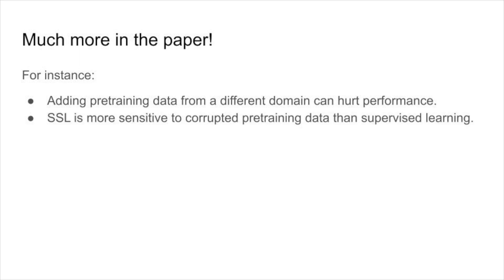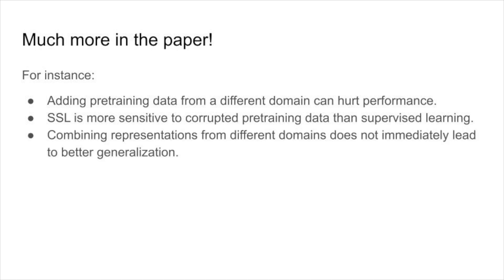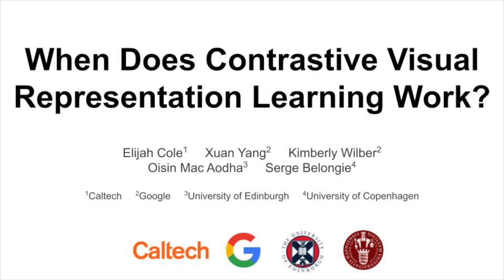There's much more in the paper. For instance, adding pre-training data from a different domain can actually hurt performance. Self-supervised learning is more sensitive to corrupted pre-training data than supervised learning. And combining representations from different domains does not immediately lead to better generalization. Please see the paper for the rest of the results.